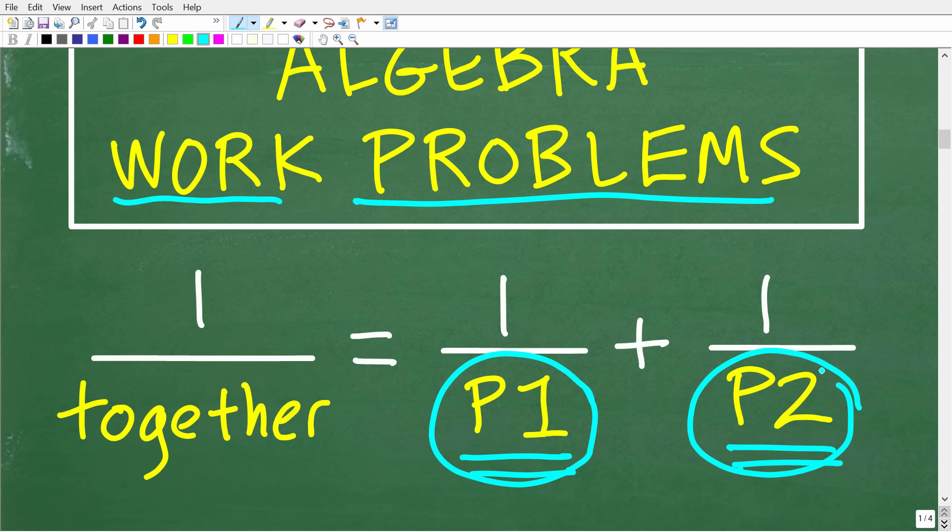Now, the time it will take if they work together is going to be right here. So, one over their combined time or the time it will take if they work together is going to be equal to one over that first person's time plus one over that second person's time. So, you can see how we can use this formula to solve this problem.